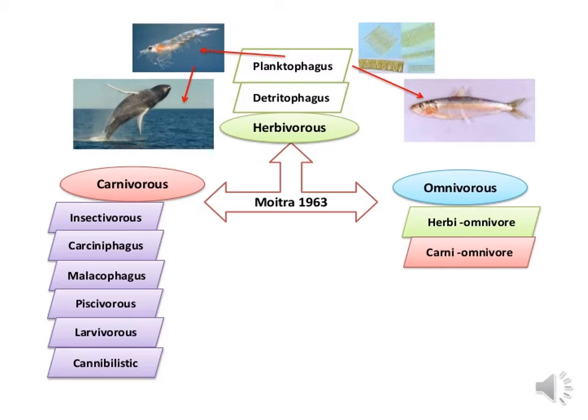Certain fishes basically utilize zooplankton. The second herbivore subtype is detritivophagus, which includes those fishes subsisting mainly on detritus — that is why large quantities of sand or mud are encountered in their gut. The third feeding group is carnivores, which is further divided into different feeding subgroups: insectivores, carcinophagus, malacophagus, piscivorous, larvivores, and cannibalistic.